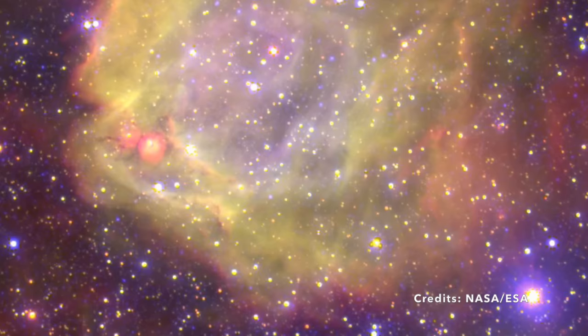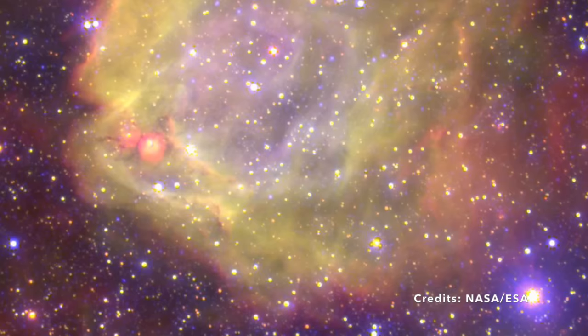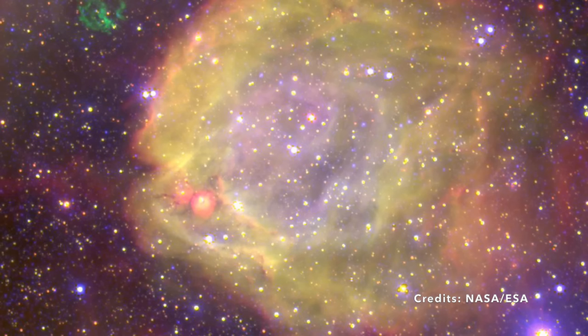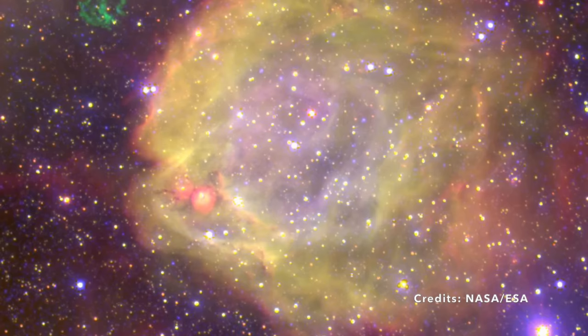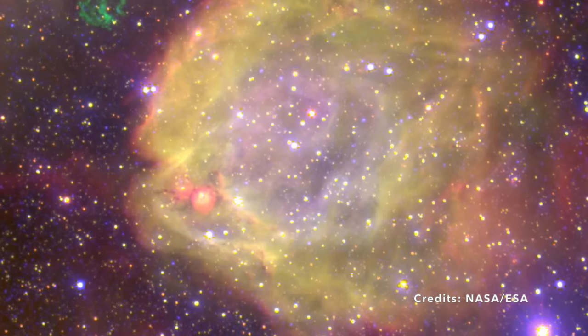But wait, there's a surprise element. Outside the scorching embrace of AB7's nebula, there's a delicate pattern of green tendrils. What could they be? They're the ghostly remnants of a past supernova explosion, like the silent whispers of a star that once was.